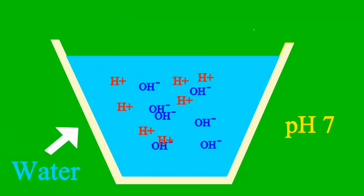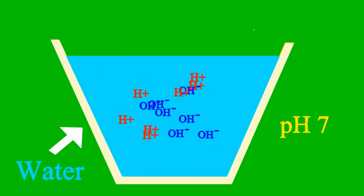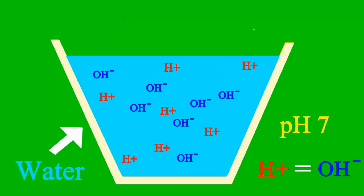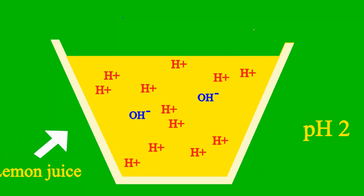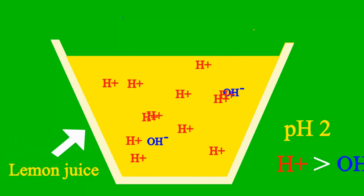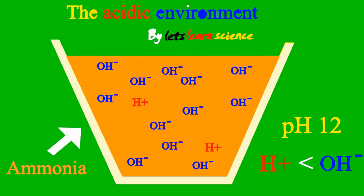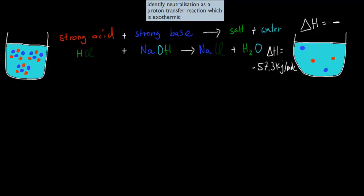When the pH is 7, the sample is neither an acid nor a base. Less than 7 it's an acid, more than 7 it's a base. What we're going to do in this video is cover this dot point: identify neutralization as a proton transfer reaction which is exothermic.